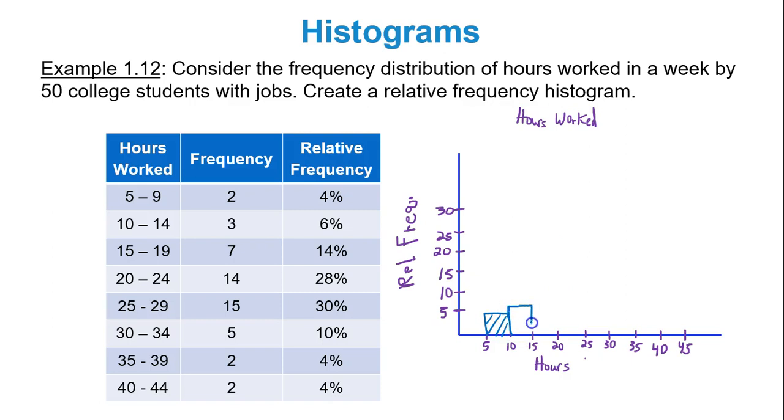Second class goes up to 6%. So from 10 to 15, draw a rectangle going up to 6%. Then from 15 to 19, or 15 to 20, because that's how our x-axis is labeled, 14%. Our rectangle should go up to 14%. Then from 20 to 24, or 20 to 25, because that's how our x-axis is labeled, rectangle should go all the way up to 28%. Next class goes up to 30%. That's our peak. This is relative frequency we're doing now.